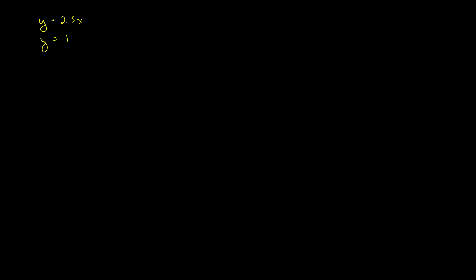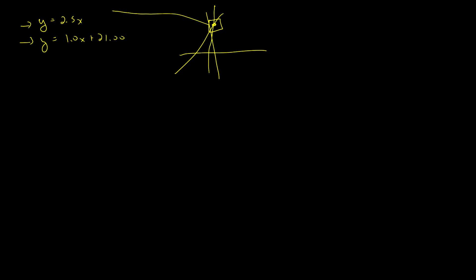What we want to look at now are systems of equations. Systems of equations is the idea that when you have two things happening at once. We looked at that when we looked at the bridge tolls — we had the 2.5 times x and the 1.0 times x plus 21. This created two systems of equations, and we looked at the point where they intersected as being a solution — some value that, if we put into each one, solved both equations.